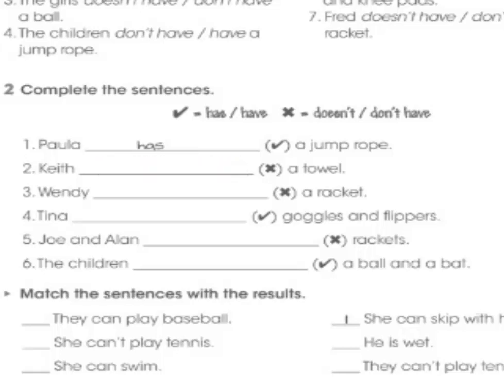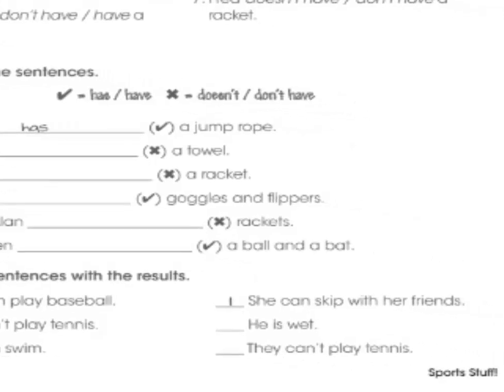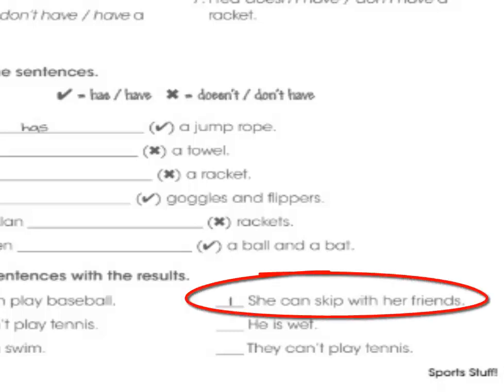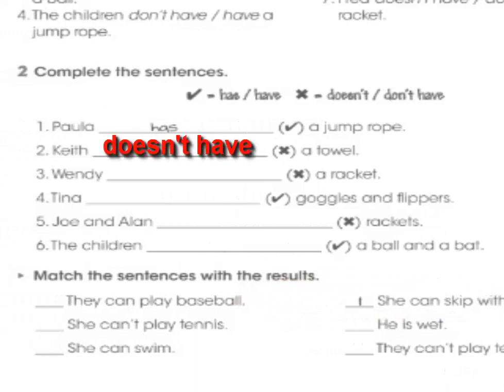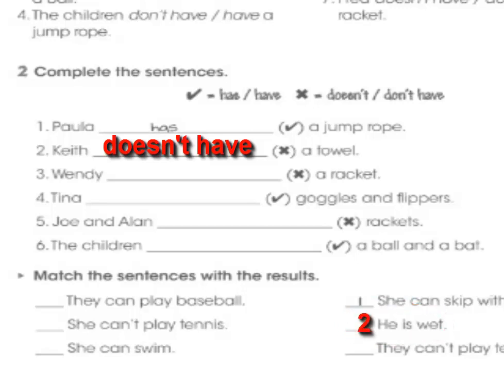Now match the sentences with their results. For example, Paula has a jump rope — according to the workbook: 'She can skip with her friends,' because she has her jump rope. For number two: Kai doesn't have a towel — the result is 'He is wet,' because he doesn't have a towel. That is number two. Please complete numbers three through six and connect each sentence with its result.